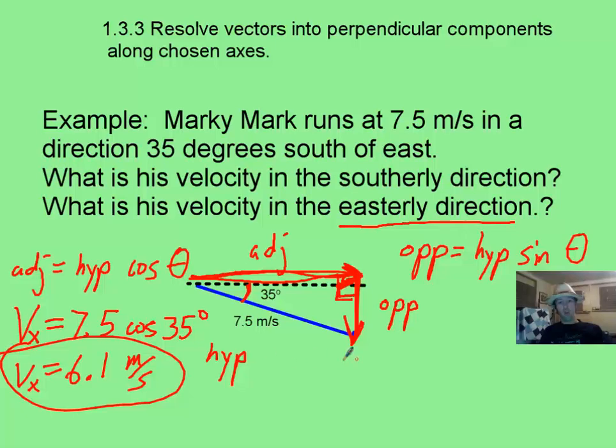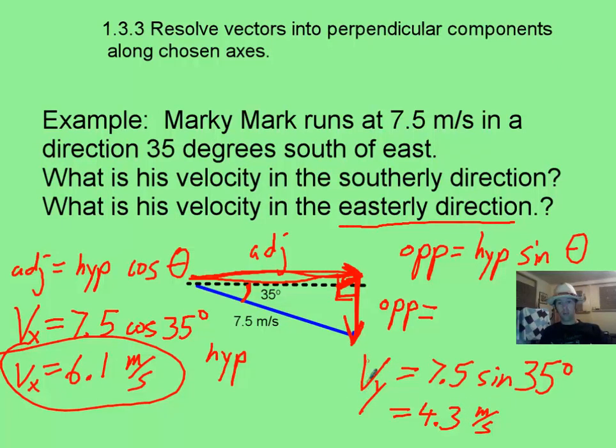And hopefully you calculated your v sub y as being the 7.5 times the sine of 35 degrees, which I got as being about 4.3 meters per second. Now you go ahead!